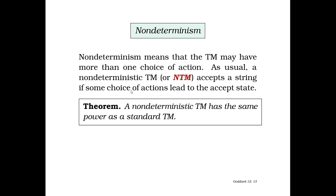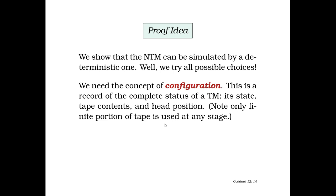Another thing to consider is non-determinism in Turing machines. A non-deterministic Turing machine may have more than one choice of action at any given time — one of them will be followed, but the same conditions will not necessarily result in the same outcome. When a non-deterministic Turing machine (NTM) accepts a string, it follows a certain set of actions from its choices. There is a theorem which states that a non-deterministic Turing machine has the same power as a standard Turing machine.